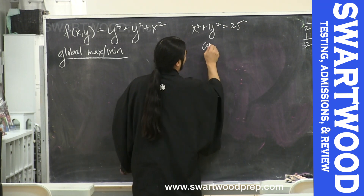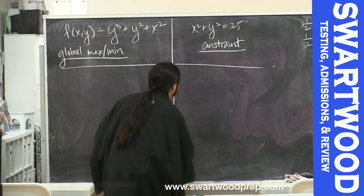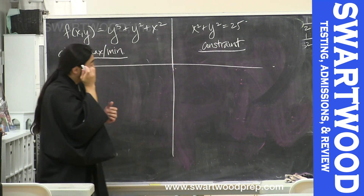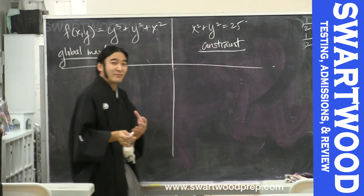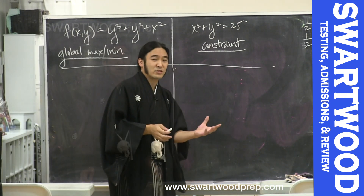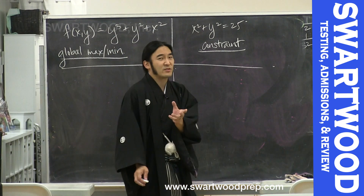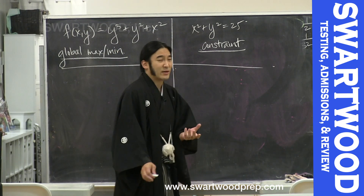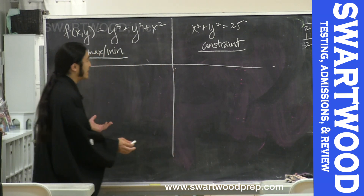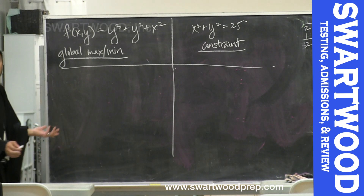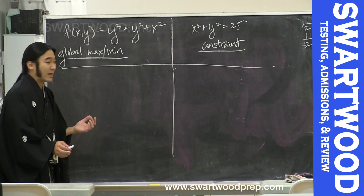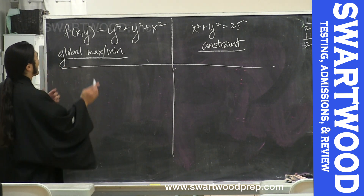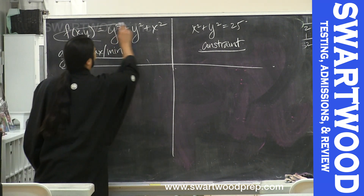Given the constraint x squared plus y squared equals 25. You can do this using our old method and you don't have to use Lagrange multipliers, but since the point of this video is how to use Lagrange multipliers in a mellow setting, let's do that.